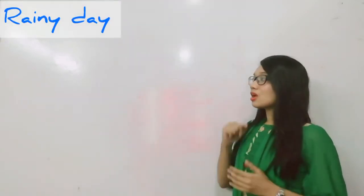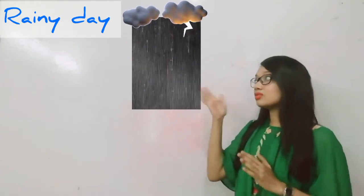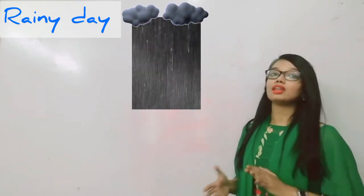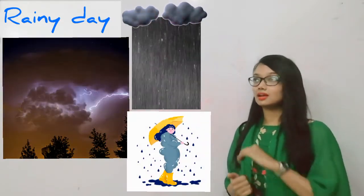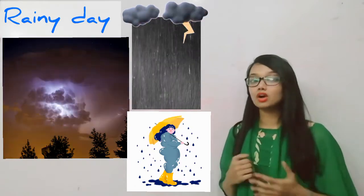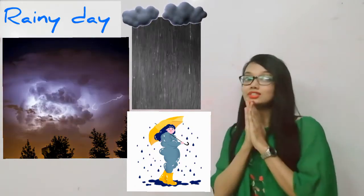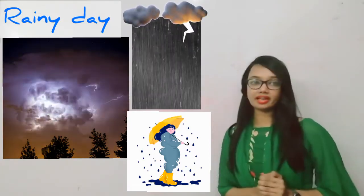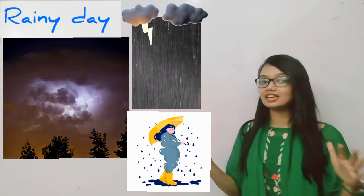During rainy days there are clouds in the sky and droplets are falling down from the clouds. On rainy days we use raincoats and umbrellas to stay dry. Also on rainy days there is thunder and lightning too.